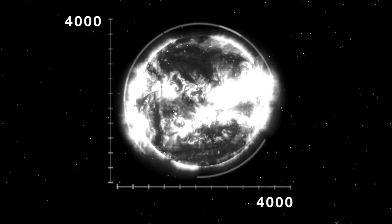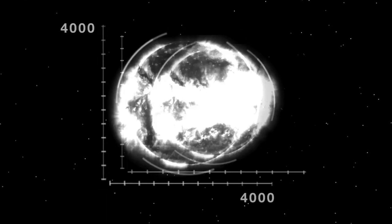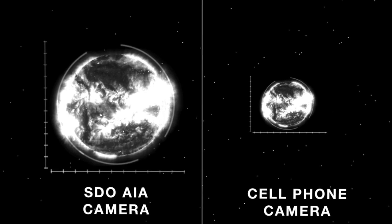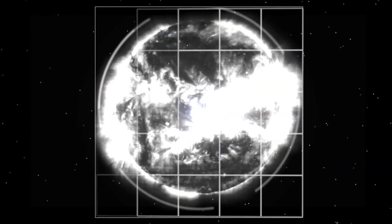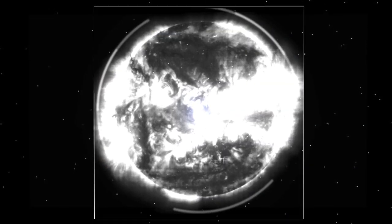Our cameras are 4K by 4K pixels. So that's about 16 million pixels sitting on each camera. We can see images of the full disk of the Sun. To see the whole Sun in high resolution is better than seeing just a little bit of the Sun.